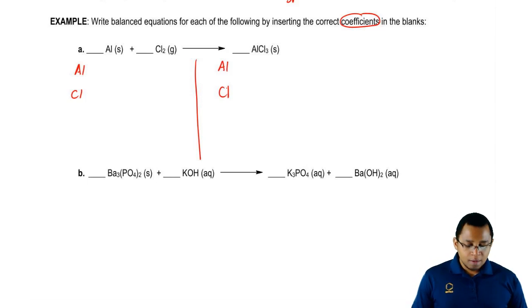On the left side, we have only one aluminum. We also have, there's a two here, so we have two chlorines. On the right, we still have one aluminum and we have now three chlorines. You can see that the lists don't match. That's because the equation is not balanced. So all we have to do is just go down the list and see what doesn't match. Our chlorines aren't matching, so that's what we want to balance.